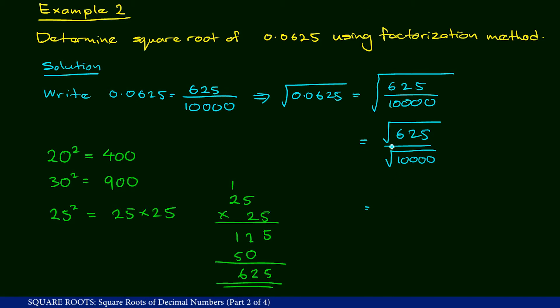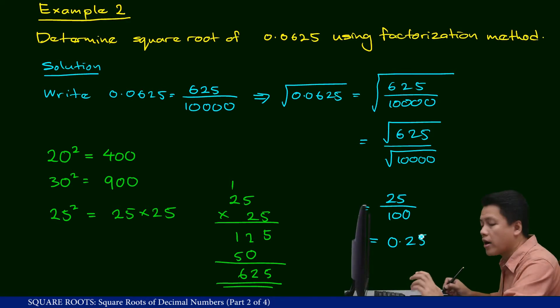Which means that square root of 625, which is 25, over square root of 10,000, which is 100. So the answer that we are looking for is 0.25. So that is how we get the answer for the square root of 0.0625 using factorization method.